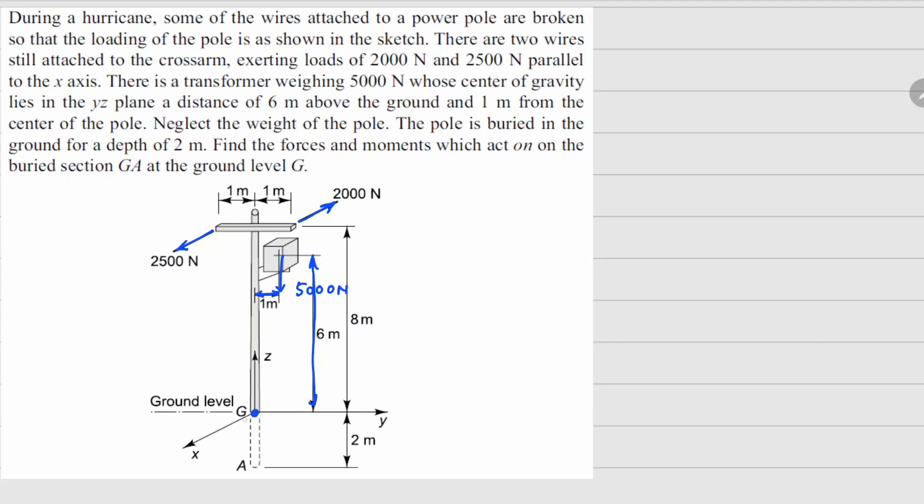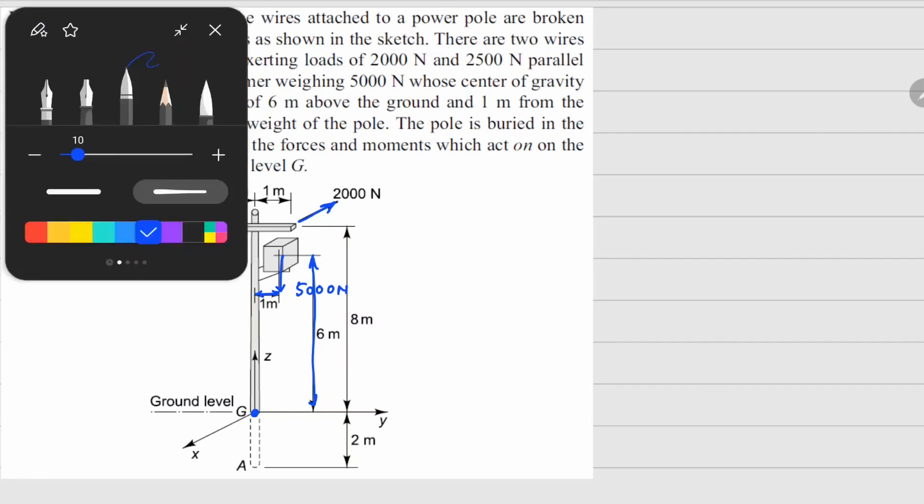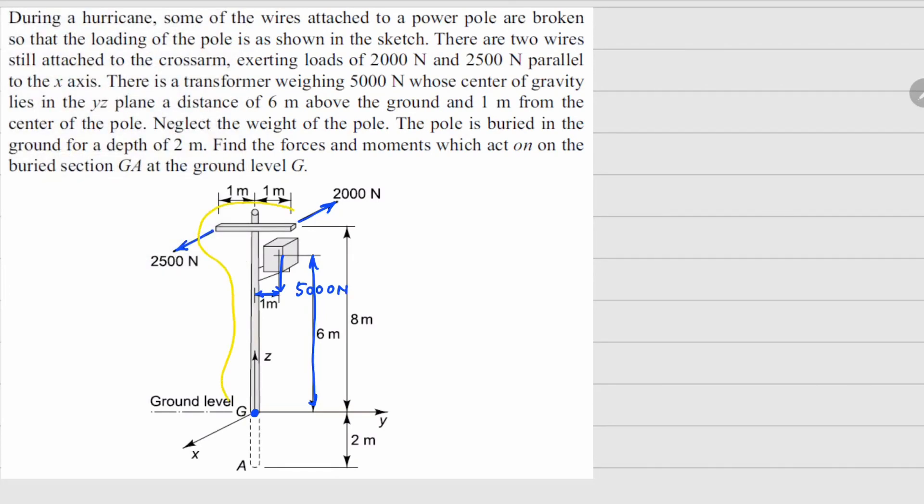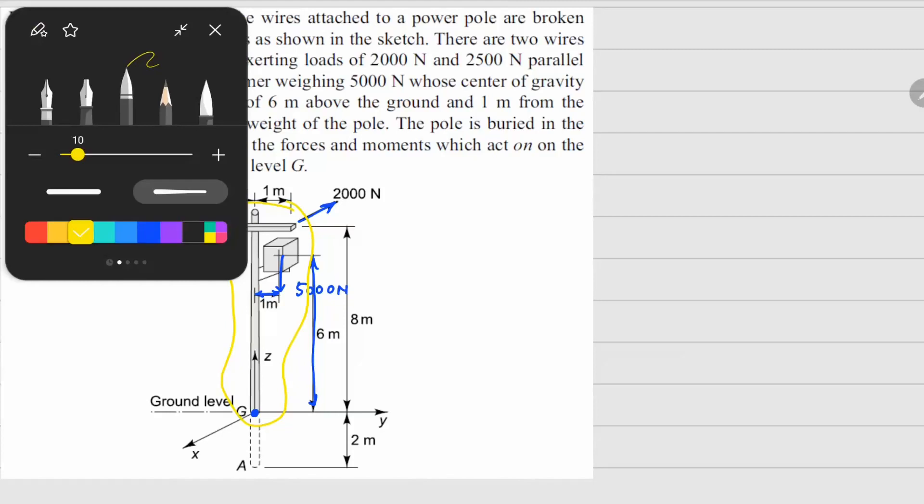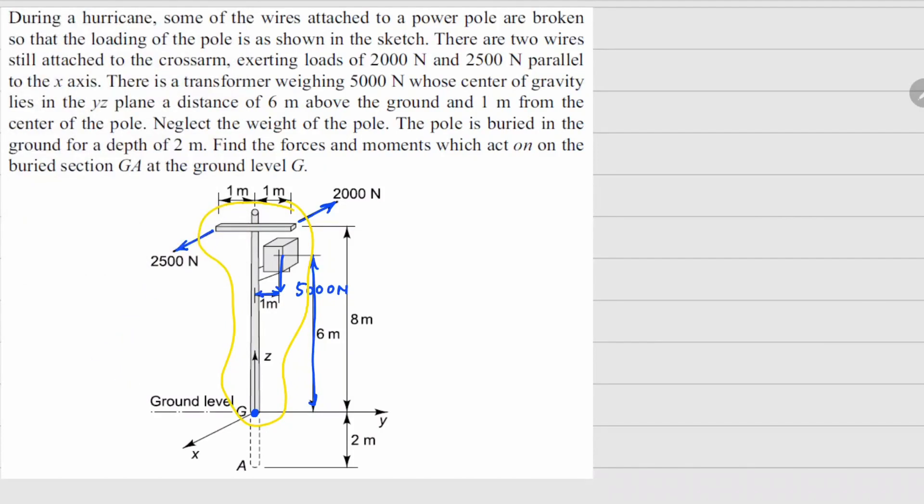So basically we have to find out what are the reactions at this point G. For this purpose if we consider this whole body as single unit and draw the free body diagram of this, we will be able to understand what are the reactions, what are the movements coming at point G.